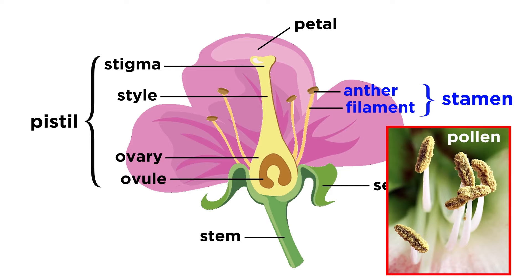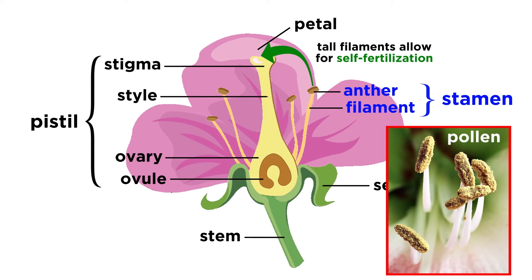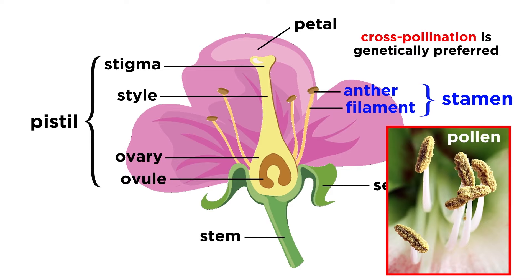The filament supports the anther, or pollen head. The anther is where pollen is produced and released, and the filament is often long enough that the anther sits above the top of the pistil, to allow for self-fertilization when pollen falls down off of the anthers and onto the top of the pistil, although most angiosperms employ mechanisms to favor cross-pollination, to enhance genetic variability.